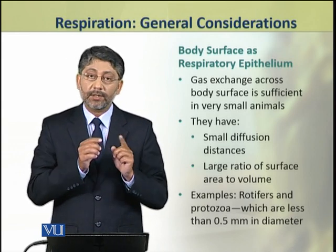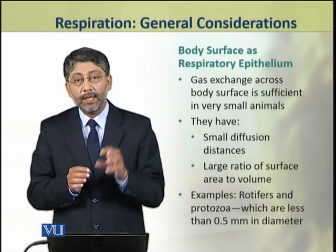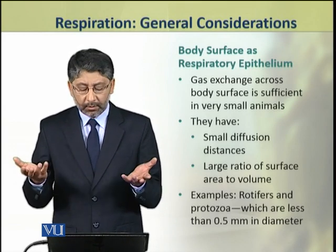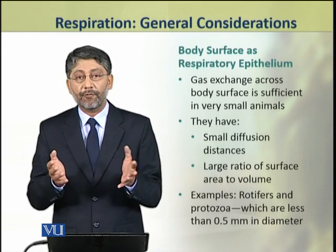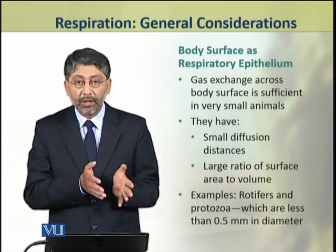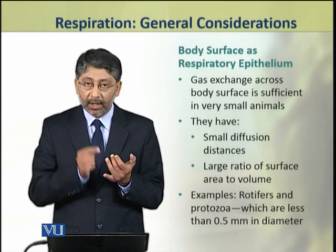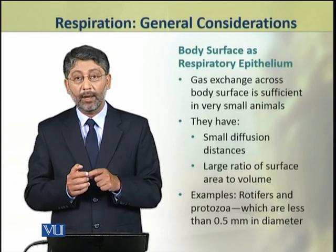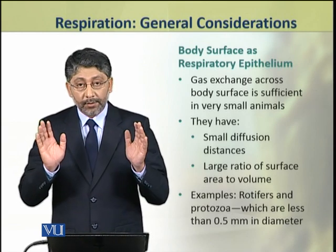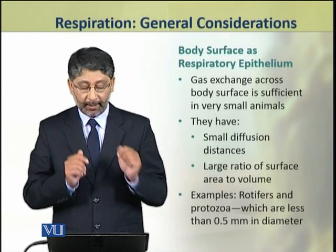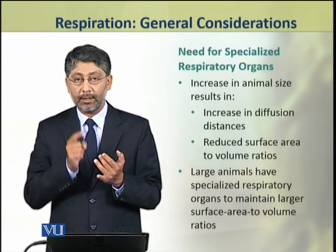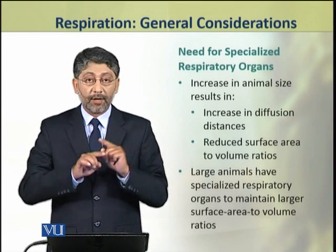Gas exchange across the body surface can fulfill the needs of very small animals because they have small diffusion distances and large surface area to volume ratios. Small animals such as rotifers and protozoans, which are unicellular organisms with a diameter of less than 0.5 mm, can rely solely on body surface gas exchange. But when animal size increases, it results in increased diffusion distance and reduced surface area to volume ratios.